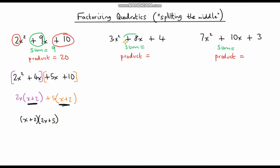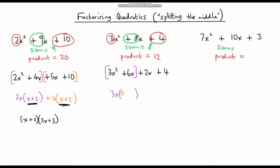For question 2, find two numbers with a sum of 8 and a product of 12. Those numbers are 6 and 2, since 6 times 2 is 12 and 6 plus 2 is 8. Rewriting 8x as 6x and 2x, I factor out a 3x from the first part — leaving x plus 2 — then factor out a positive 2 from the second part — also leaving x plus 2. Factoring out x plus 2 gives the answer: (x + 2)(3x + 2).